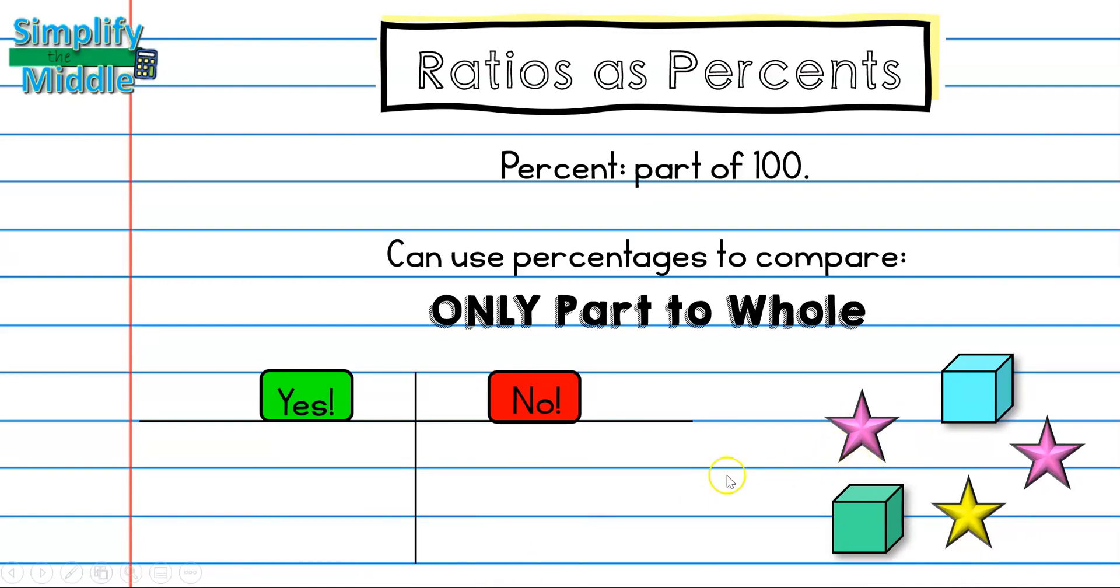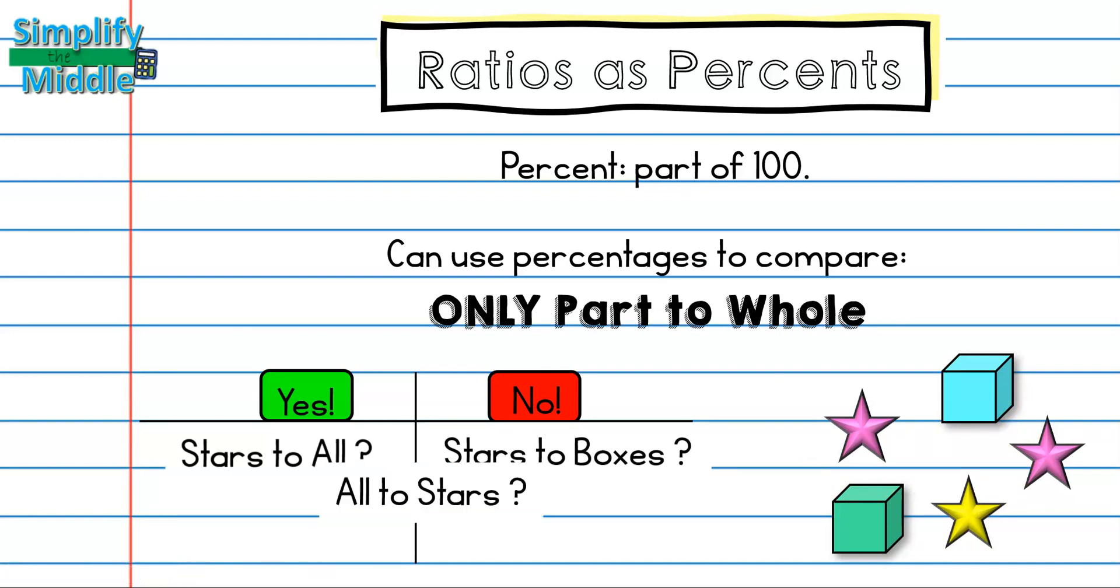Let's take a look at this group of objects. Can I use a percentage to compare stars to all? Well, since stars is a part and all is the whole, yes. What about if I had stars to boxes? In this case, stars is a part and boxes are a part, so I cannot use this for a percentage to compare.